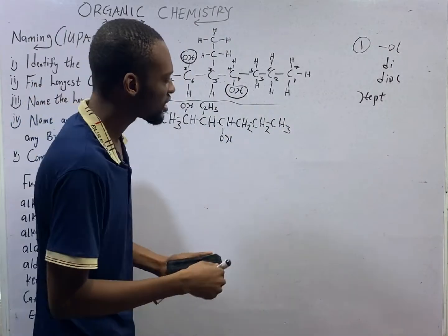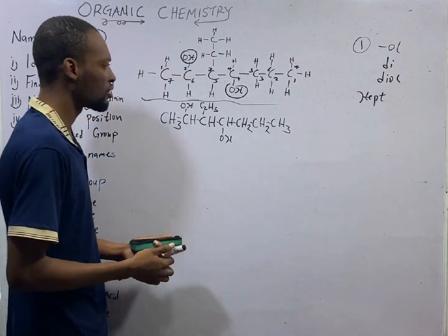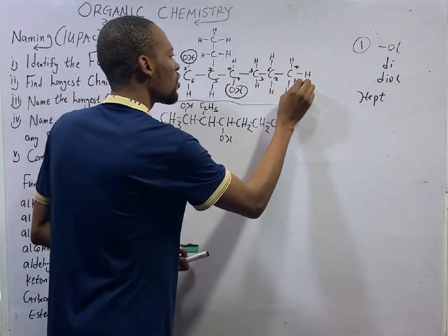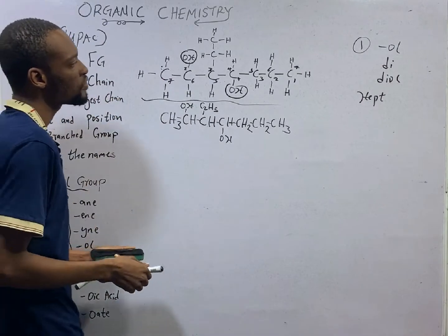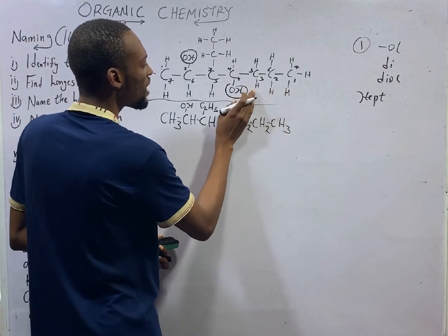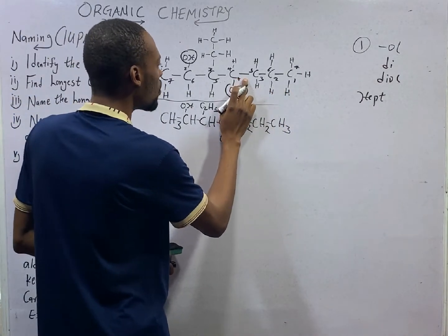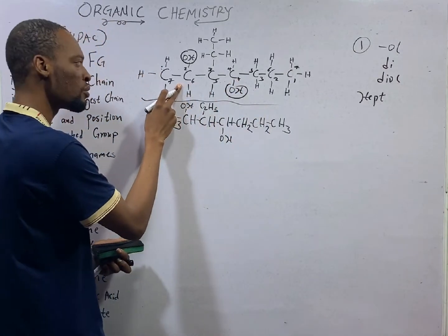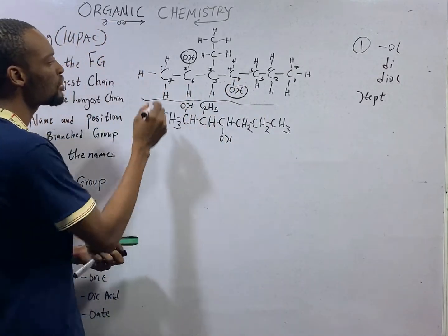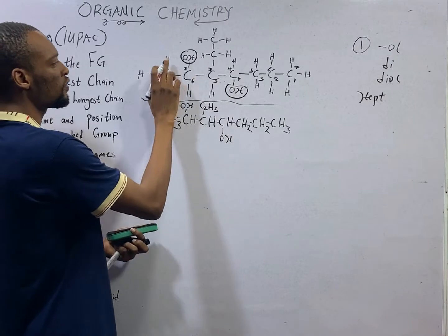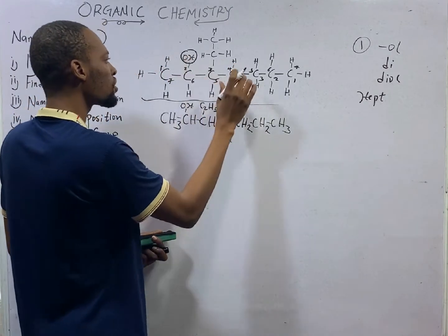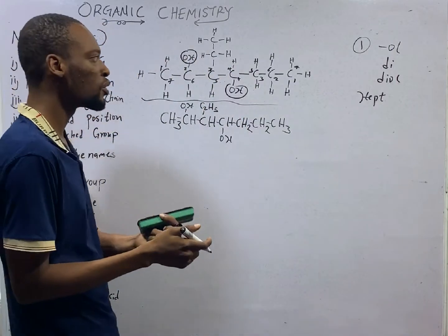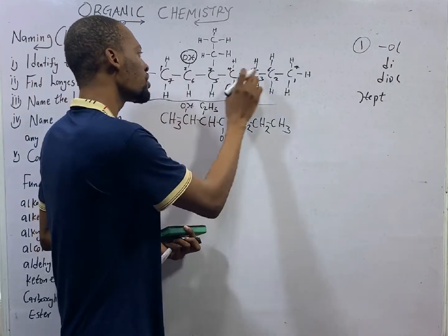You ask yourself, which of the numbering should we go with? Should we go with this one or should we go with this one? If you go with this numbering, the first functional group will be on carbon 4 and the second one will be on carbon 6. If you go with this numbering, the first functional group will be on carbon 2, the second one will be on carbon 4. So that actually gives us the smaller numbering. So we go this way.